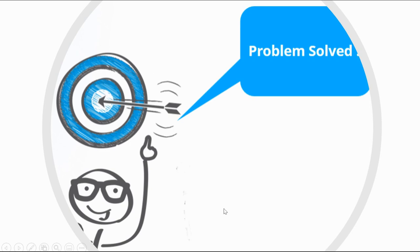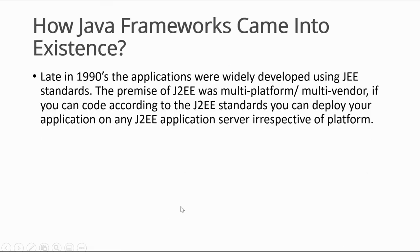The question arises: how did Java framework come into existence? In the late 1990s, applications were widely developed using J2EE standards. The promise of J2EE was multi-platform, multi-vendor support — if you coded according to J2EE standards you could deploy your application on any J2EE application server, irrespective of platform. Running your code on any application server provided benefits like transaction management, messaging, mailing, directory interfaces, etc.